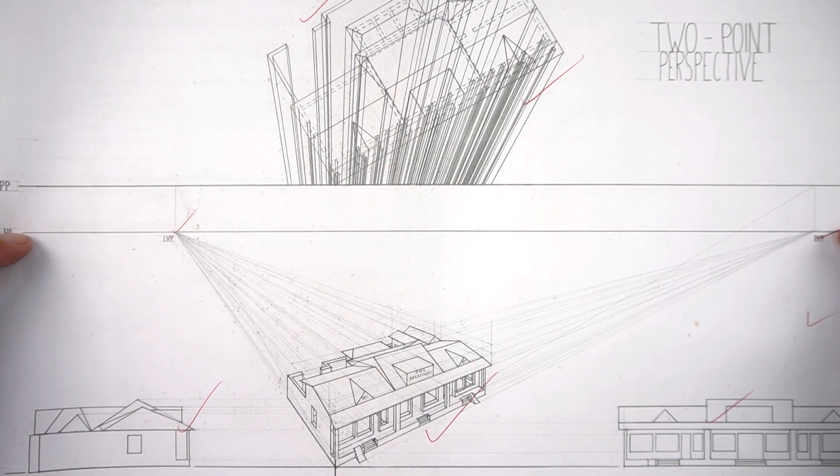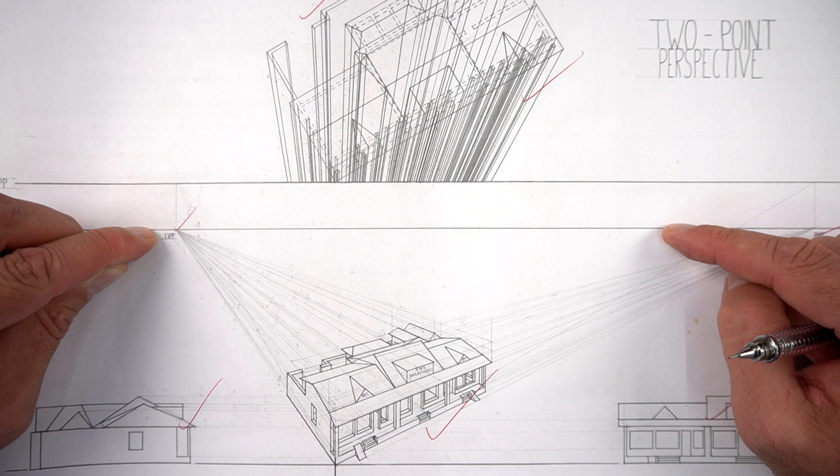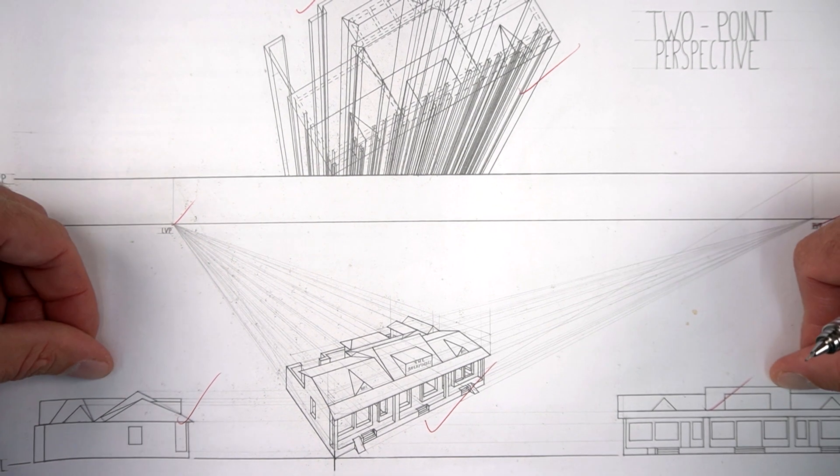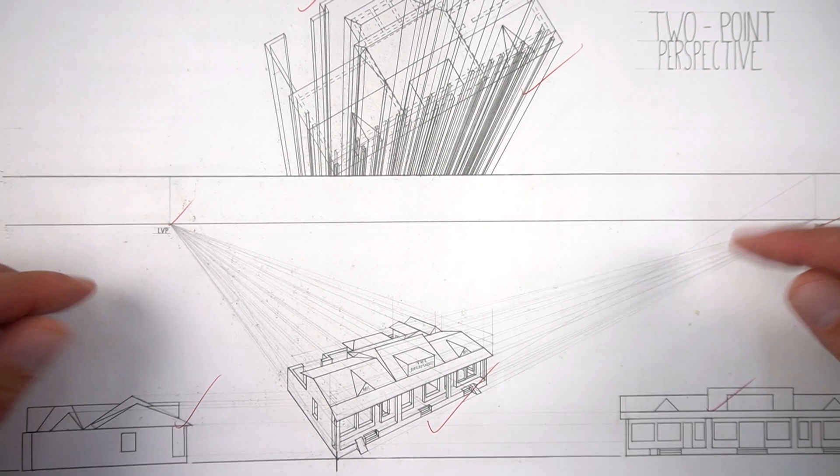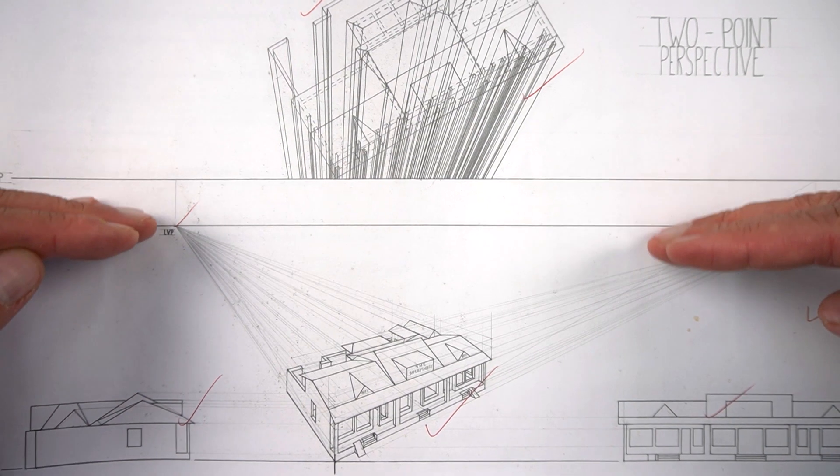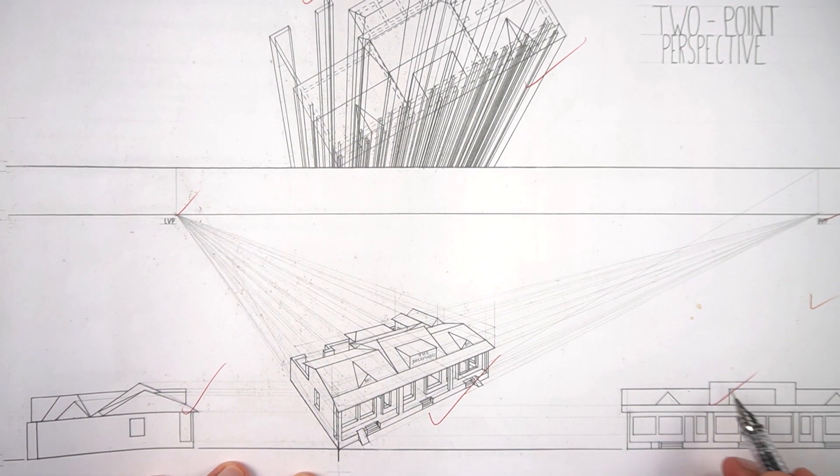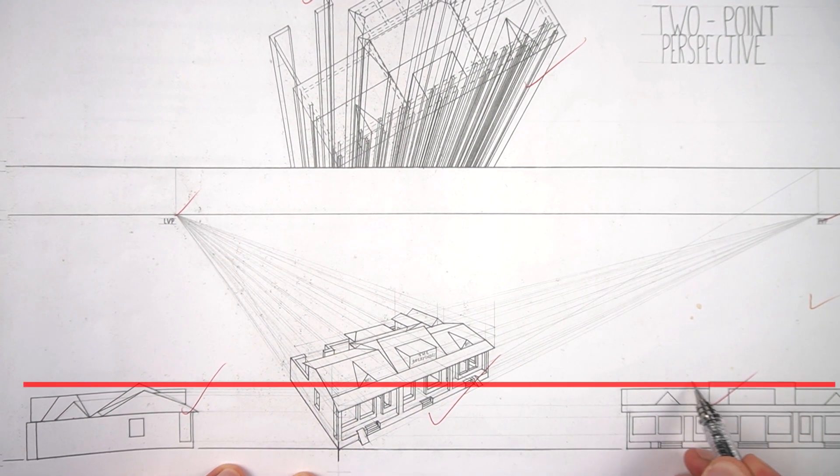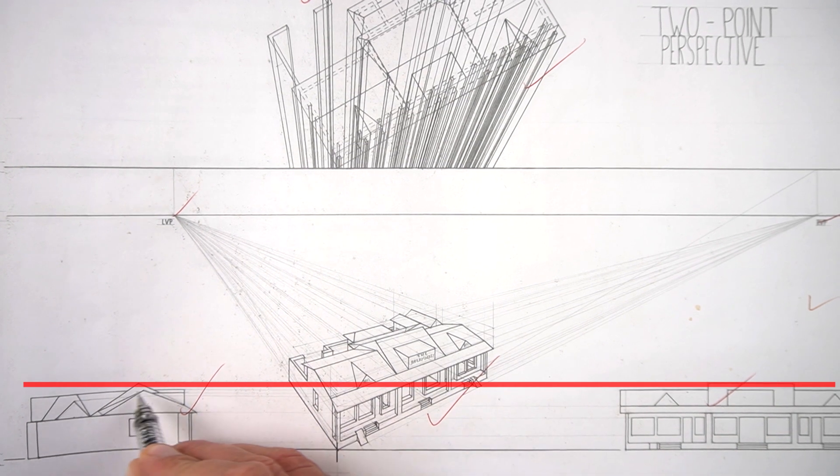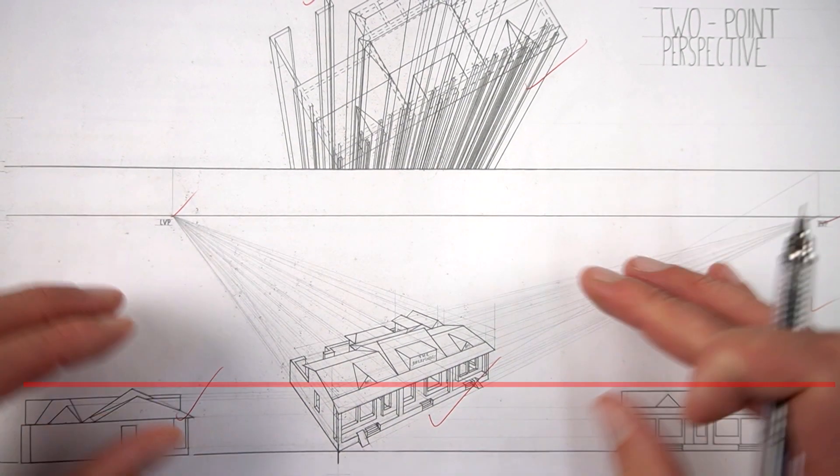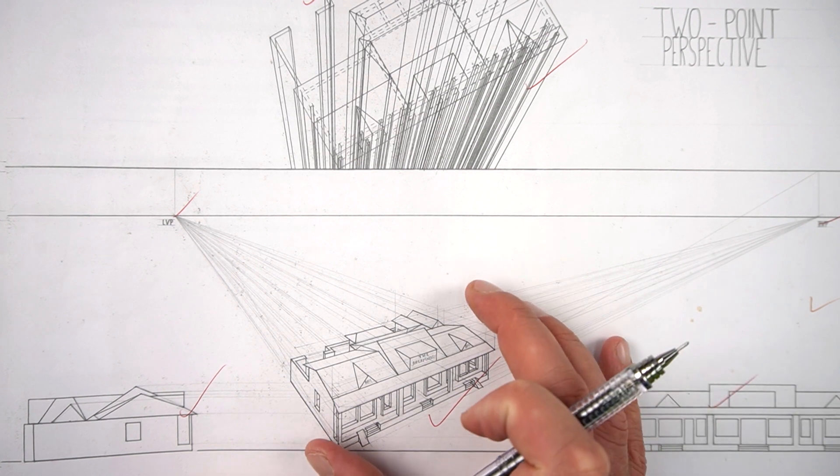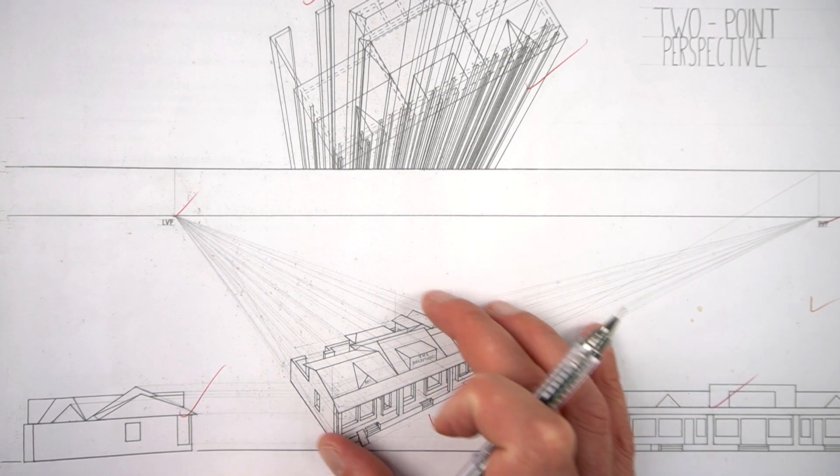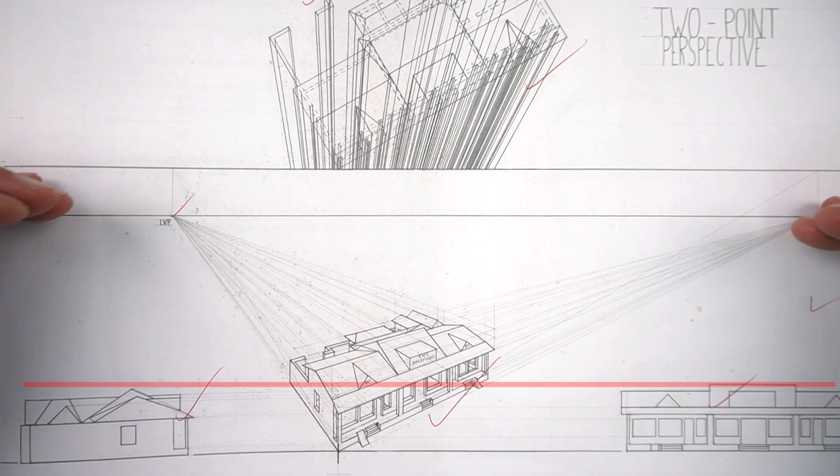But stop here for a moment. That HL was specified to be at the same height as the top of your roof. So your HL, you'll have to move all the way down for it to run in line with the top of this roof. So you're going to have a much lower angle on this design, on the media center.